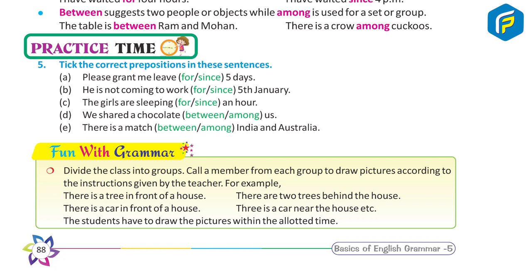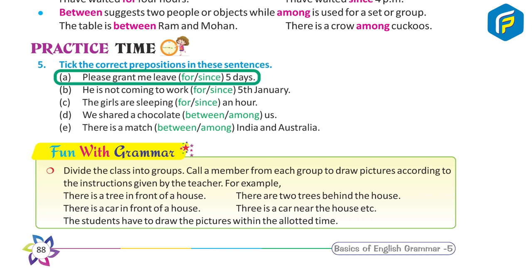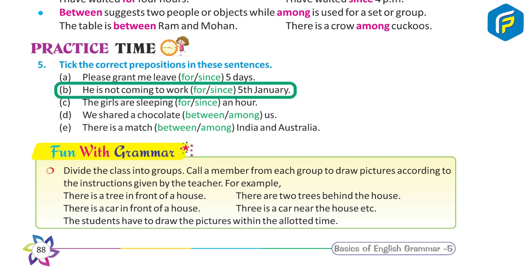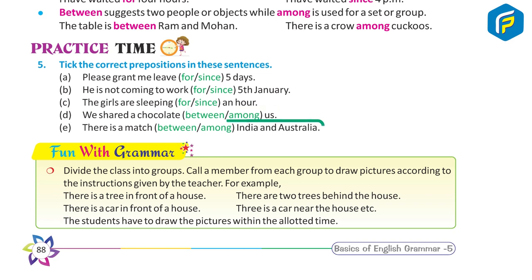Practice time 5: Use the correct preposition in these sentences. A. Please grant me leave for 5 days. B. He is not coming to work since 5th January. C. The girls are sleeping since an hour. D. We share a chocolate between us. E. There is a match between India and Australia.